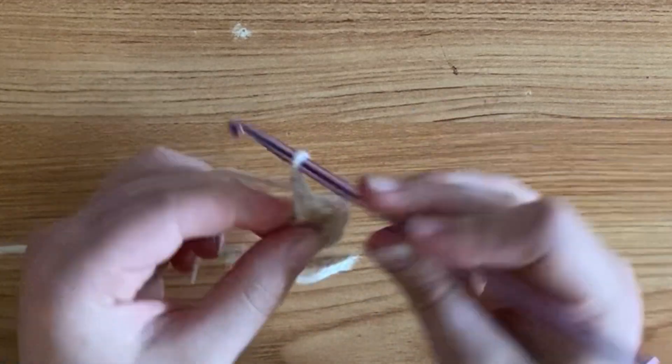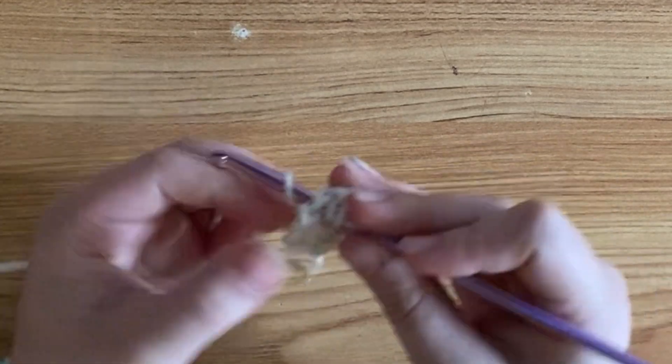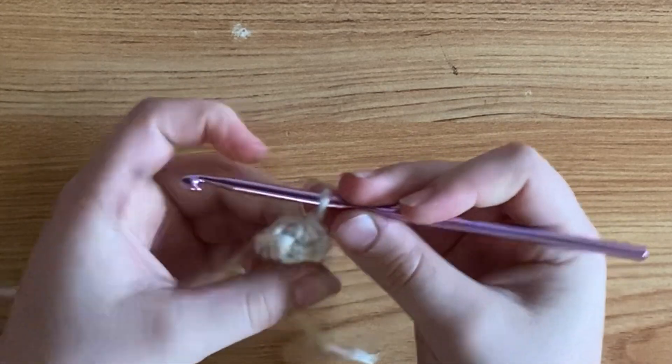Then you're going to chain one, turn your work, and beginning in the first stitch, make a single crochet two together once.